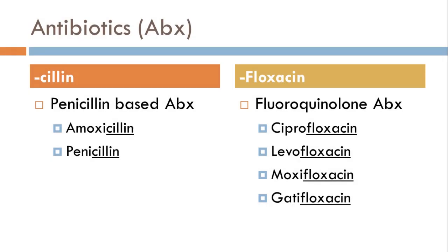Let's start with '-cillin.' Anything that ends in '-cillin' is an antibiotic — it's a penicillin-based antibiotic. You can hear the '-cillin' at the end of the word penicillin. One you'll probably see more commonly than penicillin is amoxicillin; the brand name for that is Amoxil. So anything that ends in '-cillin' is based on penicillin.